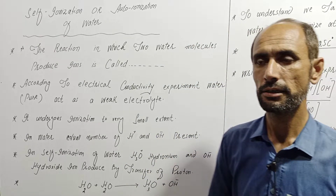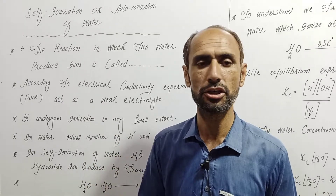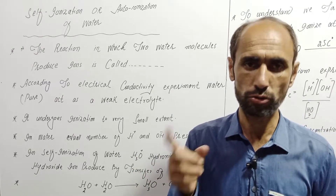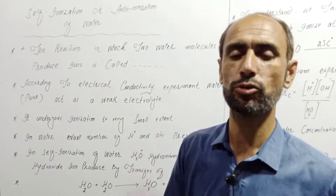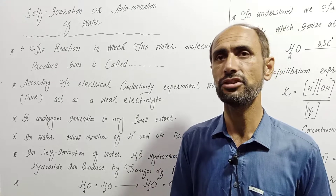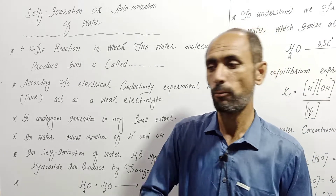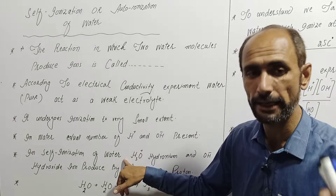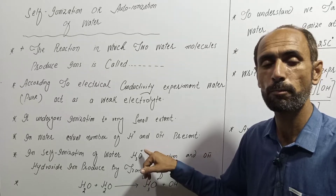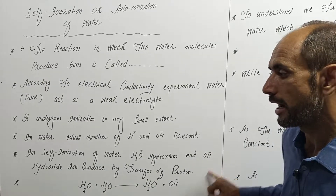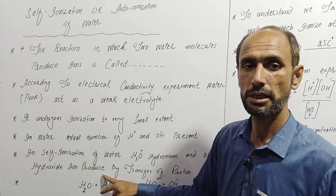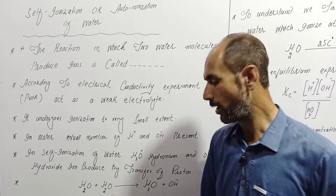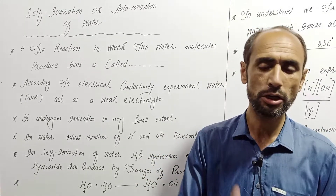Two water molecules combine and hydrogen and hydroxyl ions are produced by the transfer of a proton from one water molecule to another. In self-ionization of water, a hydronium ion H3O+ and a hydroxyl ion OH- are produced by this proton transfer.